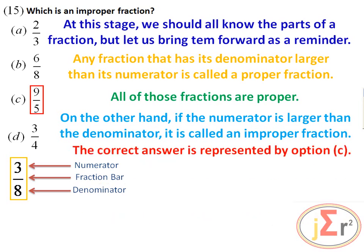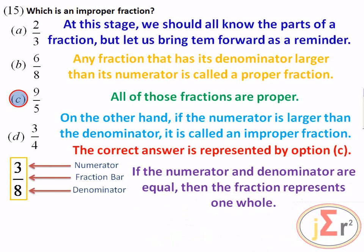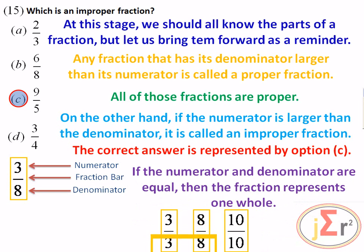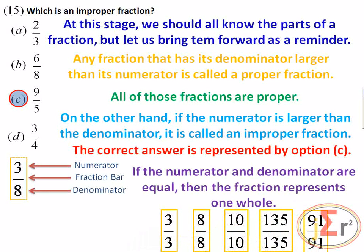The correct answer is represented by option C — the one with the numerator larger than the denominator is called an improper fraction. If the numerator and the denominator are equal, the fraction represents one whole. It does not matter if it is three-thirds, eight-eighths, or ninety-one over ninety-one — as long as numerator and denominator are equal, the fraction represents one whole.